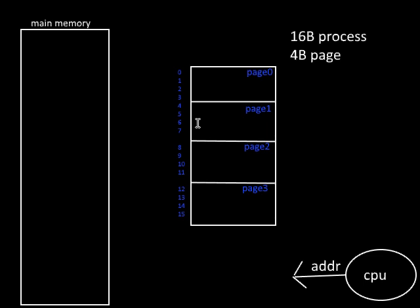Suppose from one page we need to jump to a specific byte in page 2 using a goto statement. What will be the relocatable address for that byte generated by the compiler? If the process is loaded at address space starting from 0, the address of that byte is 10. So the goto statement contains goto 10, and the relocatable address for that byte is 10.